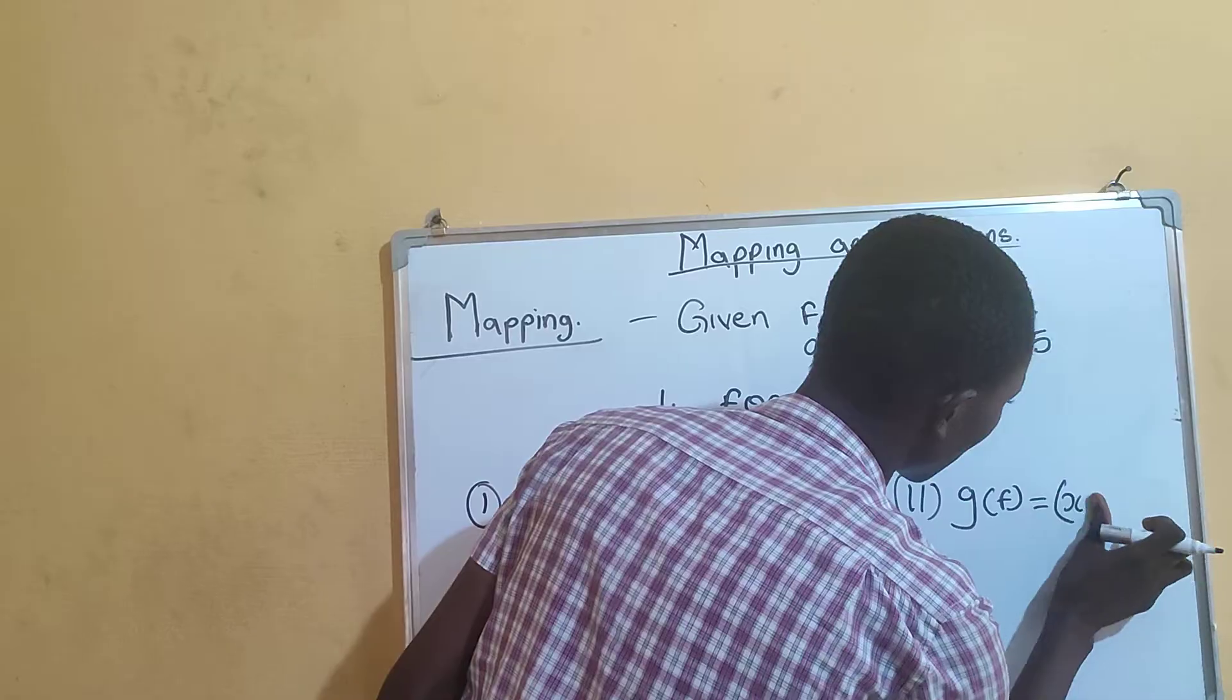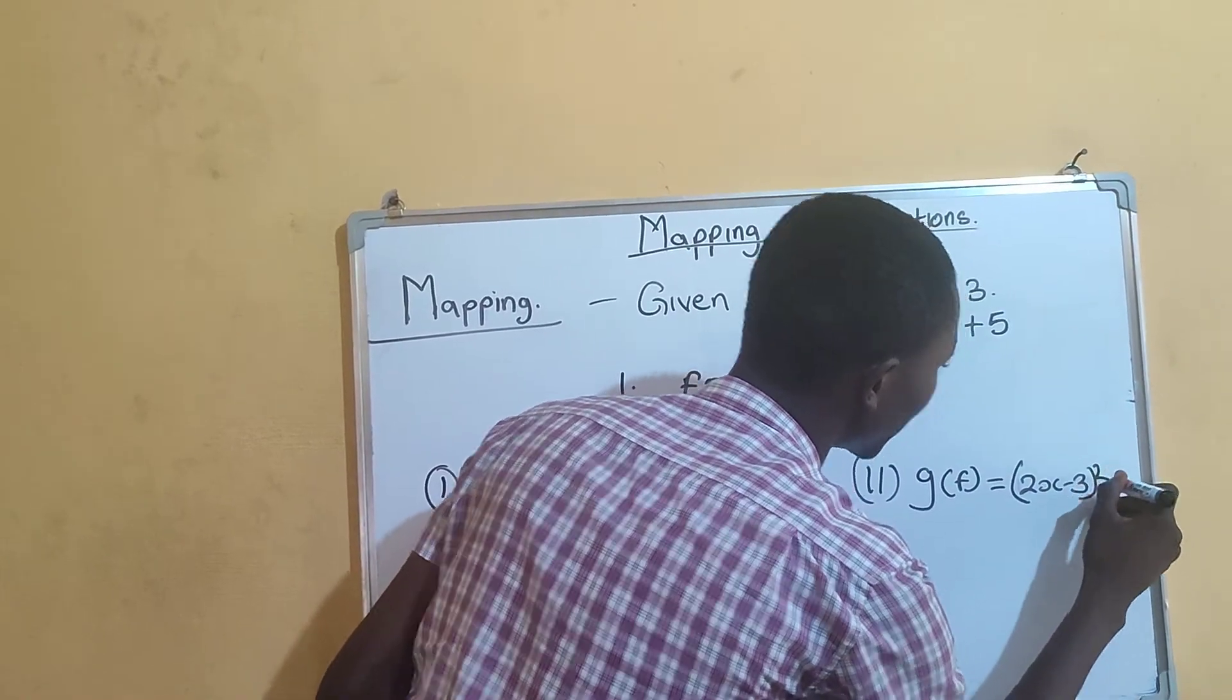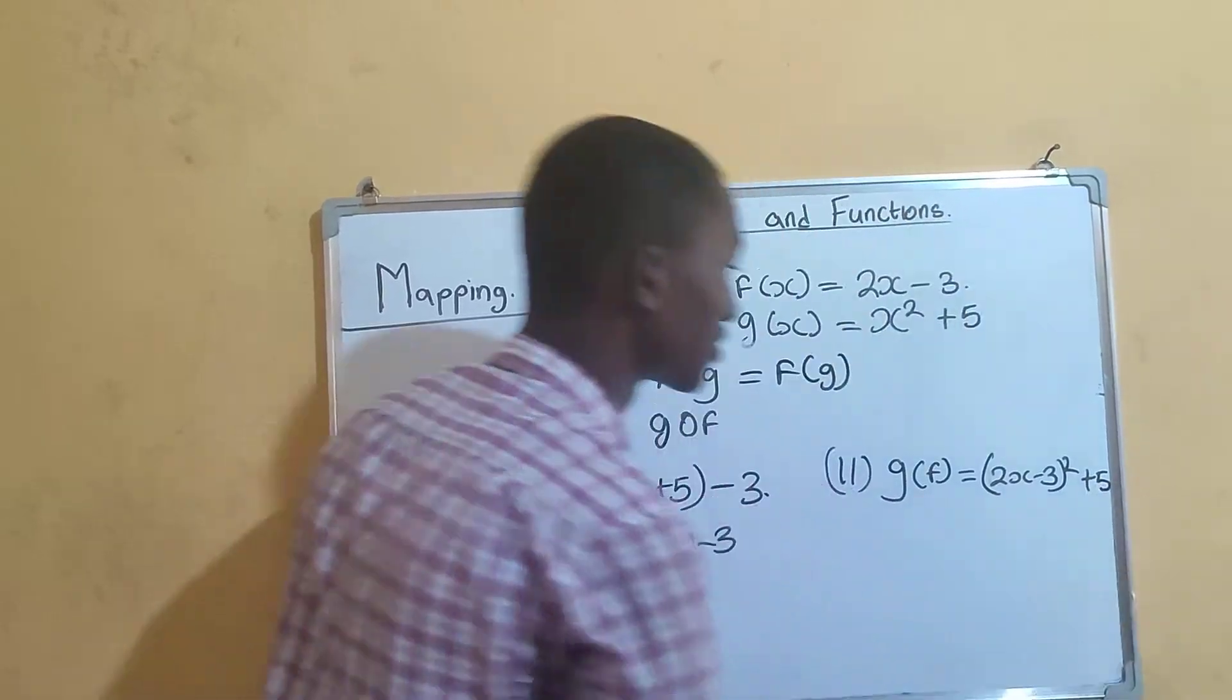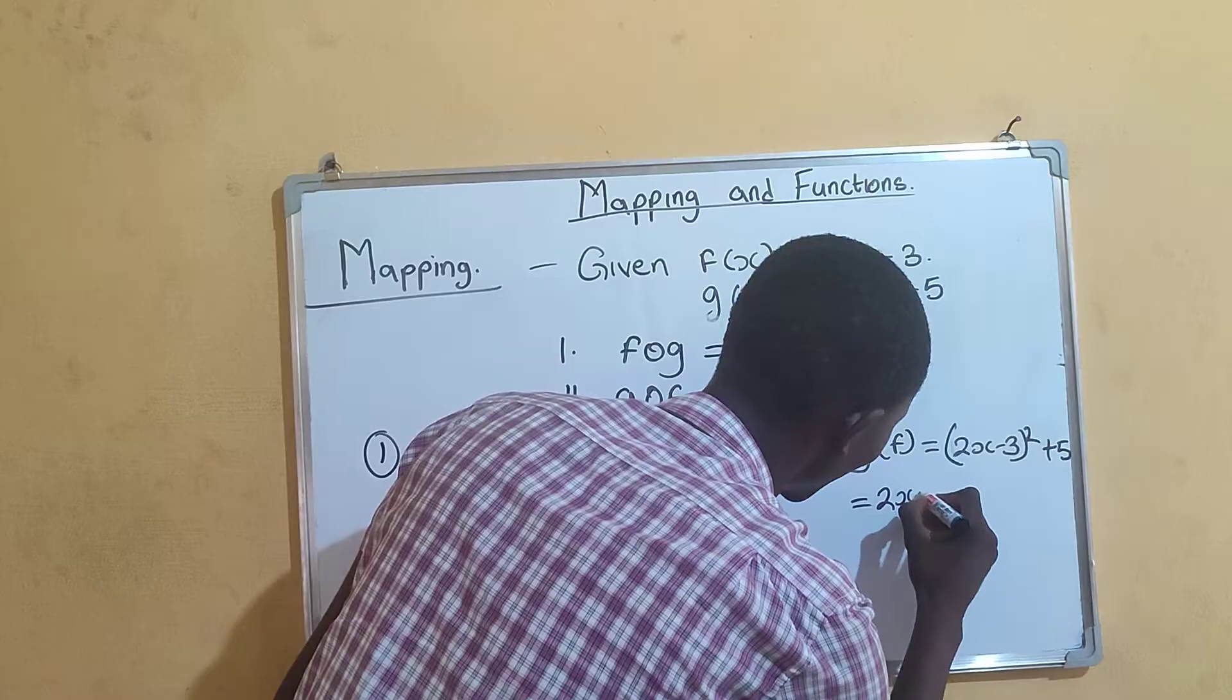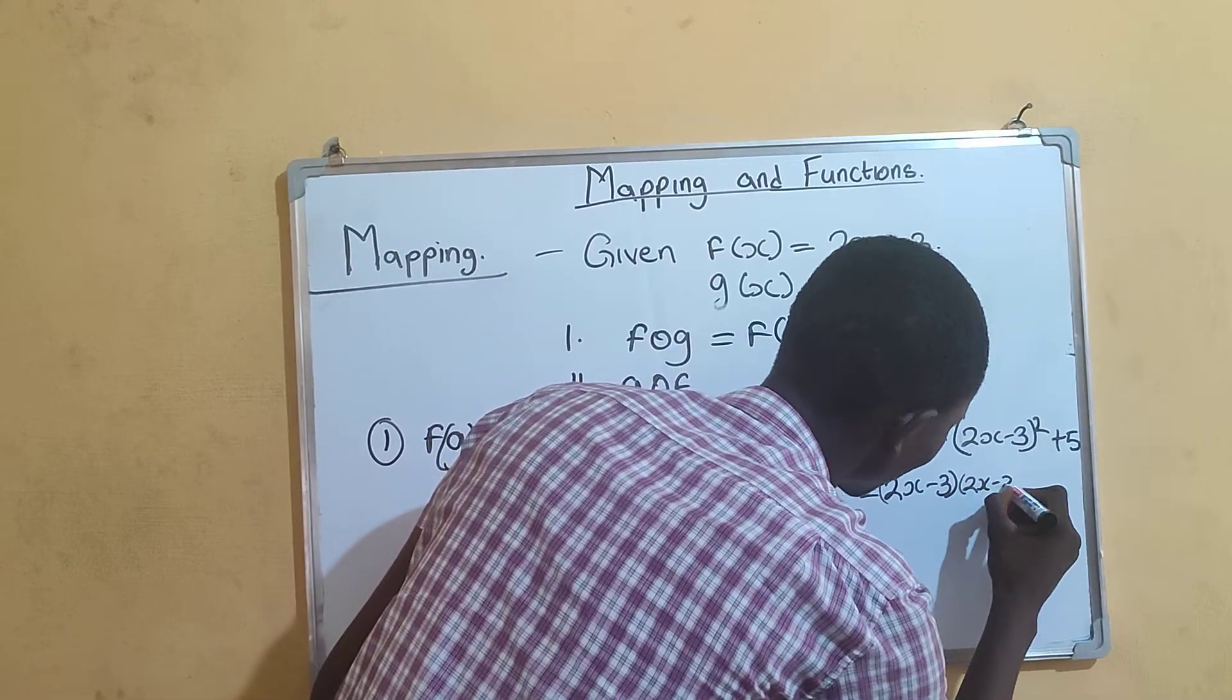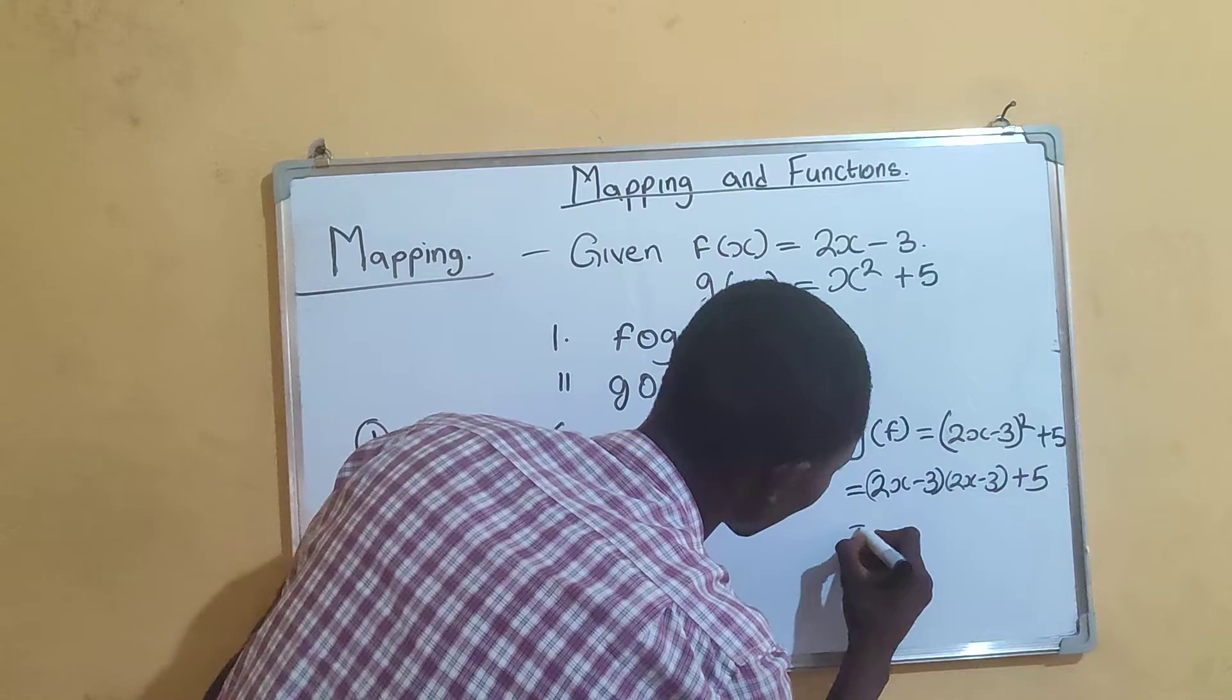So you expand this, then plus 5. Expansion of this one, the normal expansion: (2x minus 3)(2x minus 3) plus 5. 2x times 2x, that's 4x squared minus 6x minus 6x plus 9 plus 5.